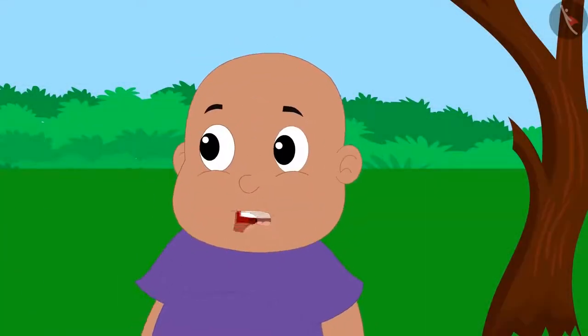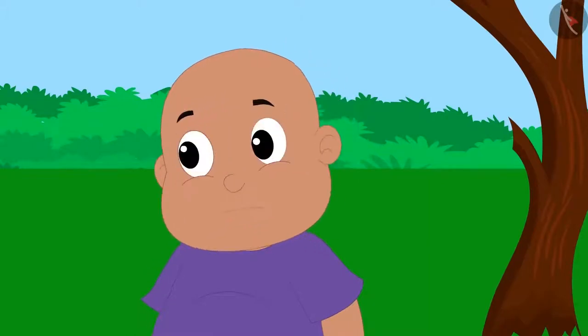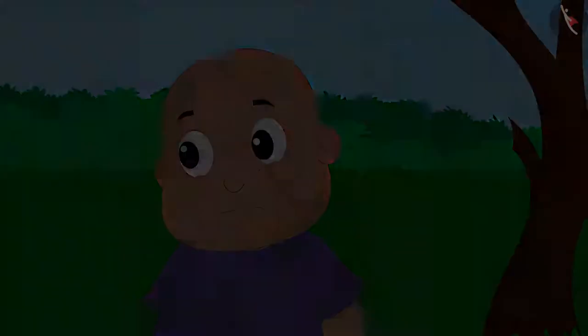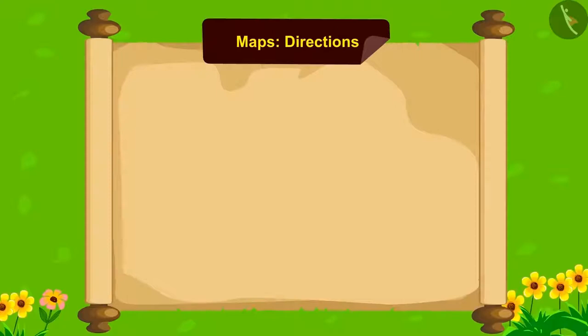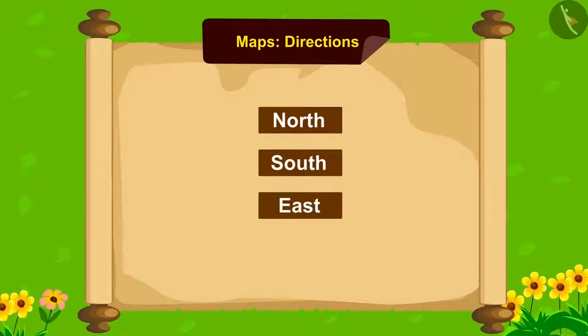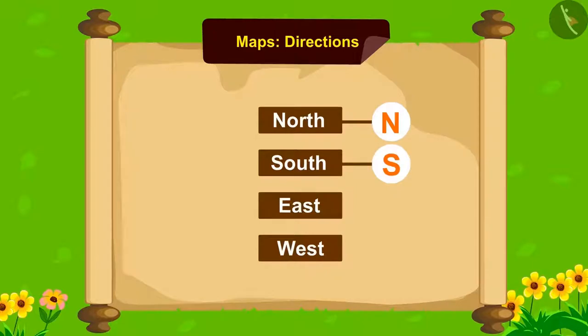But how are we supposed to use this and what directions are these, Raju? Then Raju explains it to him. There are four cardinal directions: North, South, East and West. Referred by N, S, E and W. They can be written like this too.